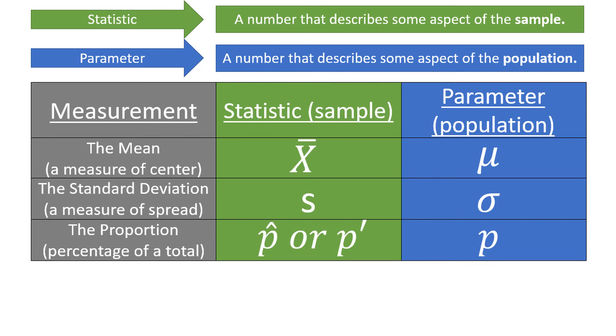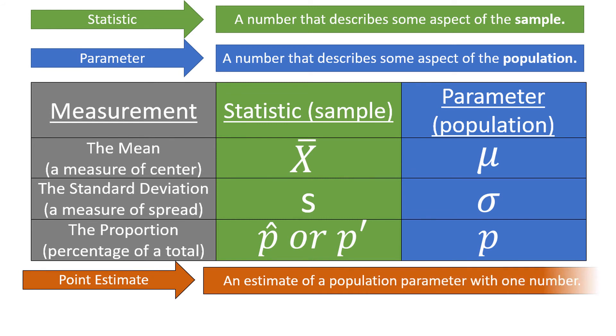One small problem though. Population parameters are virtually always unknown. Populations are large, and it's typically impossible to gather data from every individual in a population. The solution is to take samples to calculate statistics. These statistics will become point estimates for their corresponding population parameters. A point estimate is just an estimate of a population parameter using one number, typically a statistic.